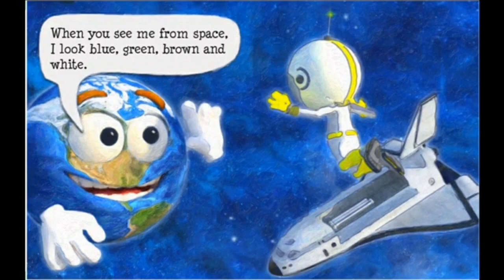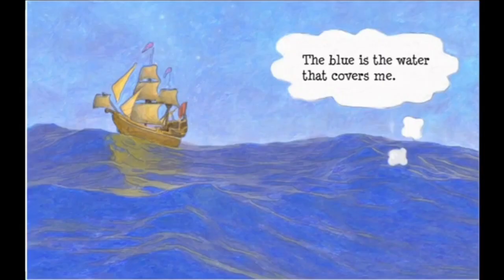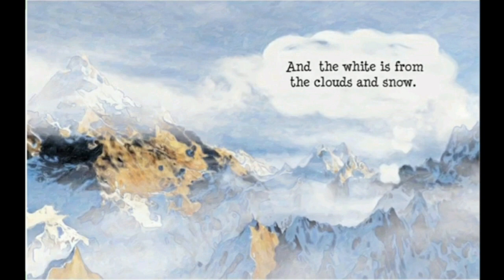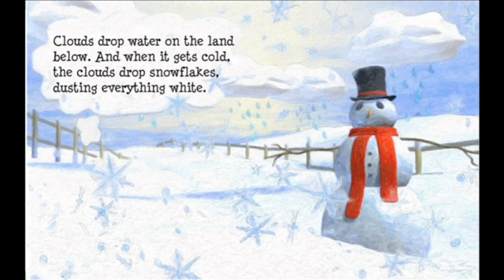'When you see me from space I look blue, green, brown, and white. The blue is the water that covers me.' The green and brown are the land you live on — brown is the soil and green is the grass and trees.